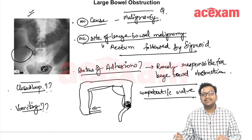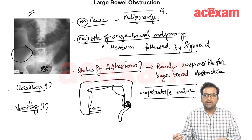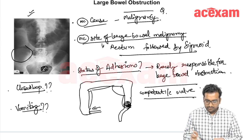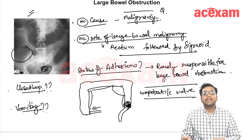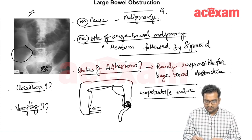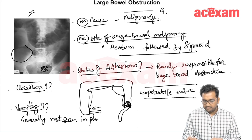That is a kind of closed-loop obstruction. There is early ischemia in closed-loop obstruction, which is why we should operate these patients early. In many cases, large bowel obstruction is a closed-loop obstruction, and vomiting is generally not seen in patients with a competent IC valve.